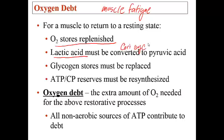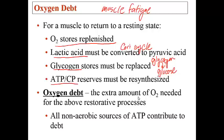Lactic acid must be converted back to pyruvic acid via the Cori cycle. Glycogen stores must also be replenished so that the next time the muscle wants to contract, glycogen can easily be broken down into glucose. The ATP and creatine phosphate reserves must be resynthesized so that ADP can be phosphorylated to make ATP. Oxygen debt is the extra amount of oxygen needed to rebalance the metabolic activities of the tissue, and any anaerobic exercise contributes much more quickly to getting into oxygen debt.